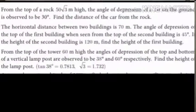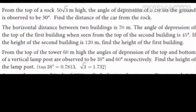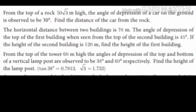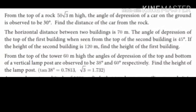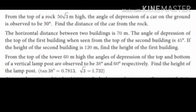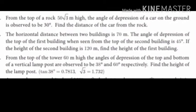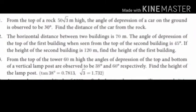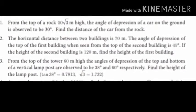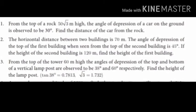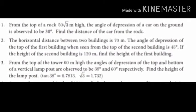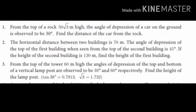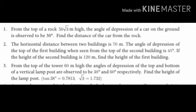The next problem: The horizontal distance between two buildings is 70 meters. The angle of depression of the top of the first building when seen from the top of the second building is 45 degrees. If the height of the second building is 120 meters, find the height of the first building.